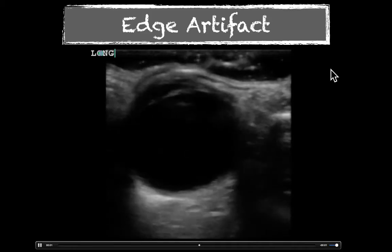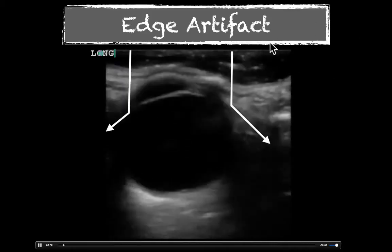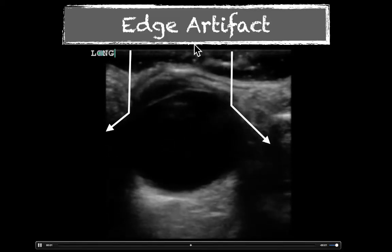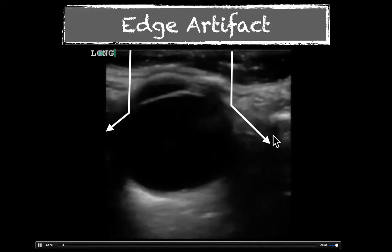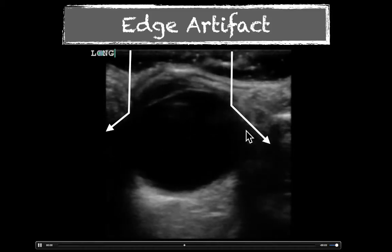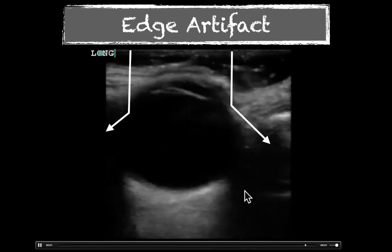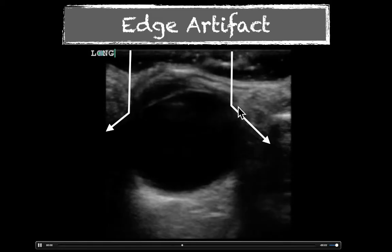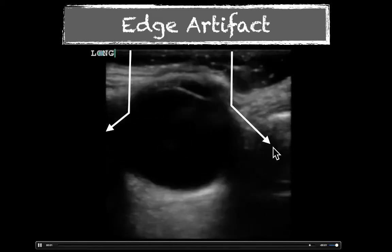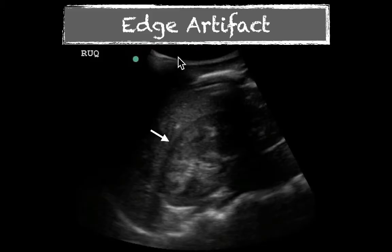Edge artifact has to do with when an ultrasound wave comes down and is deflected. A beam coming in at one angle doesn't experience the same reflective structures as another, so you'll have this beam come off. Right along the edge, we have a black spot — that's edge artifact. That's not because there's an absence of a structure there; it's just that the ultrasound wave, as it encounters the edge, is deflected off to the side or refracted. You see the same thing around the kidney, and you've got to be careful — in a FAST exam, this can be misinterpreted as fluid.